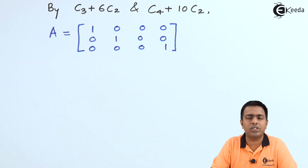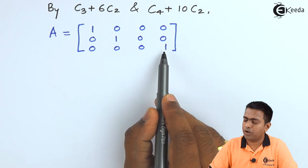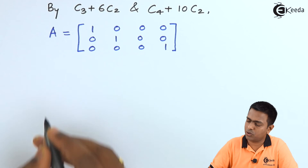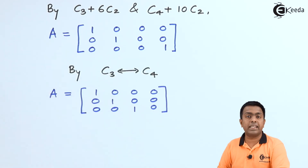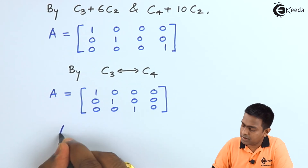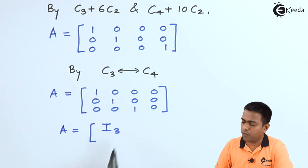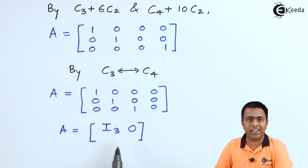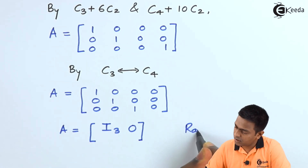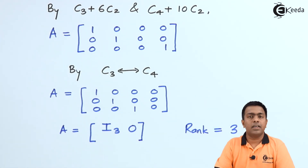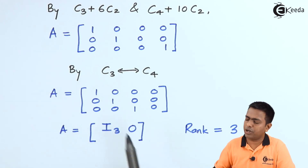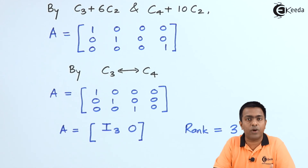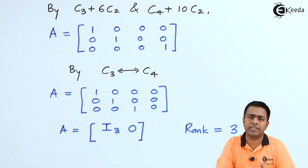All elements are now zeros and ones. We rearrange by interchanging column C3 with C4 to get the identity matrix. After this interchange, we can rewrite the matrix as I3 — the identity matrix of order 3 — with zeros elsewhere. Since the order of the identity matrix is 3, the rank of matrix A is 3.